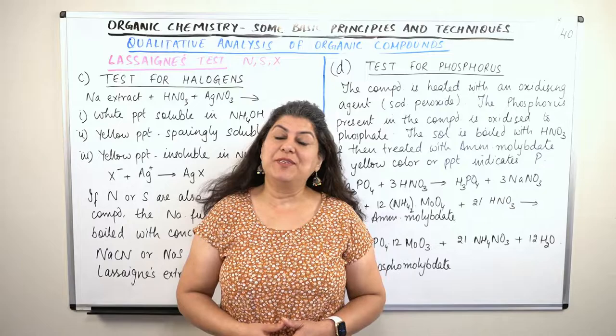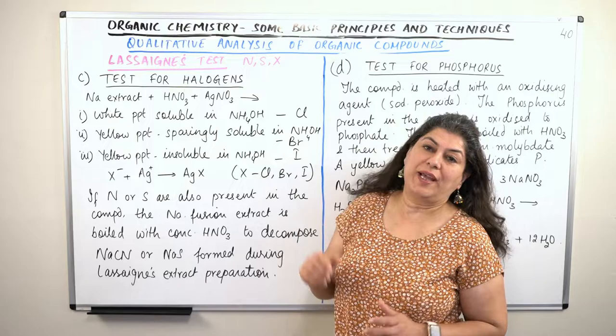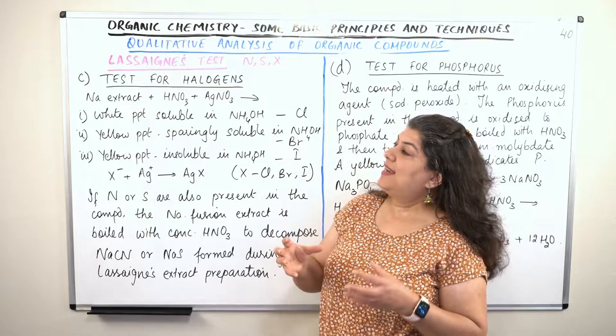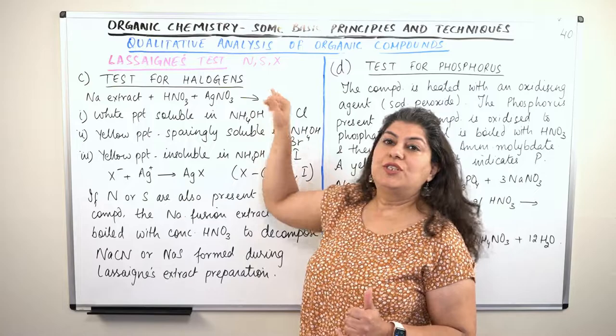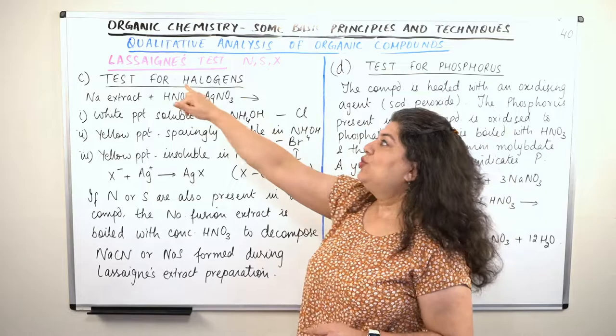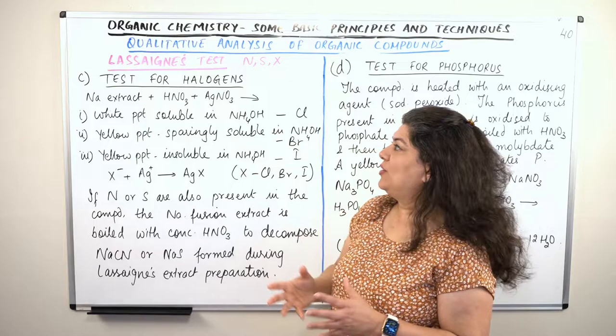I am Seema and welcome to part 40 of the chapter organic chemistry: some basic principles and techniques. We were doing the qualitative analysis of organic compounds. I explained how we prepare the Lassaigne extract and how we use it to test for nitrogen and sulphur. The Lassaigne extract is used to test for nitrogen, sulphur, and halogens. In this video I am going to start with the third part: how do we use the Lassaigne extract to test for the presence of halogens.